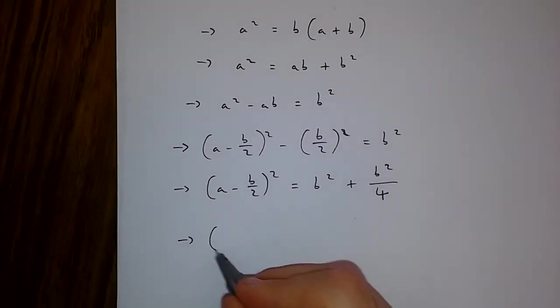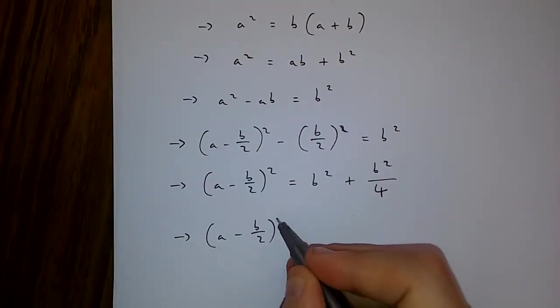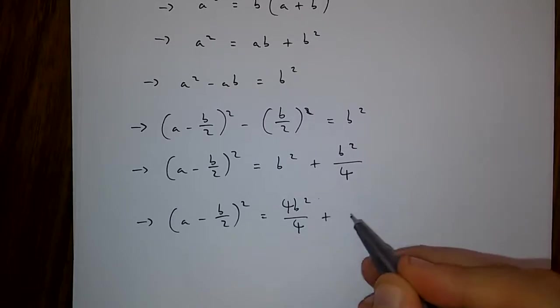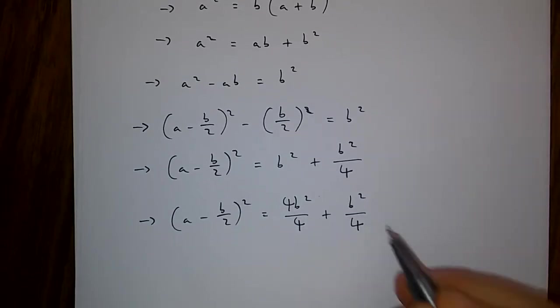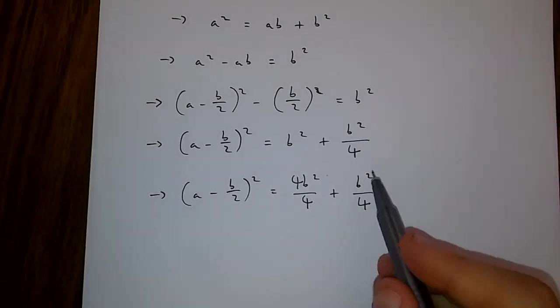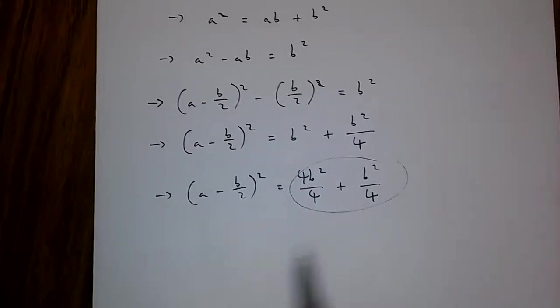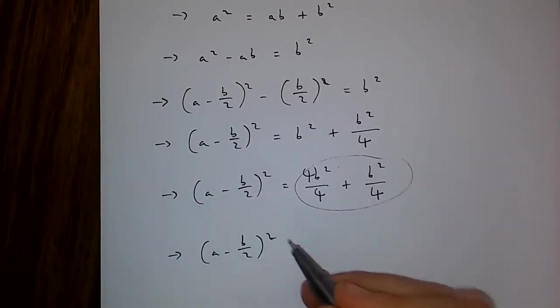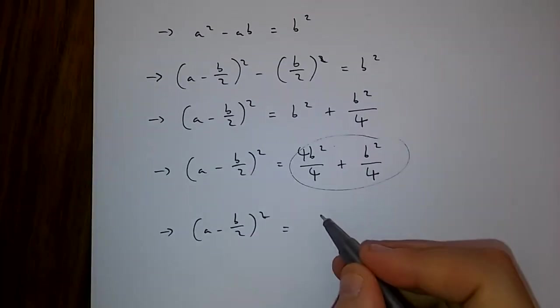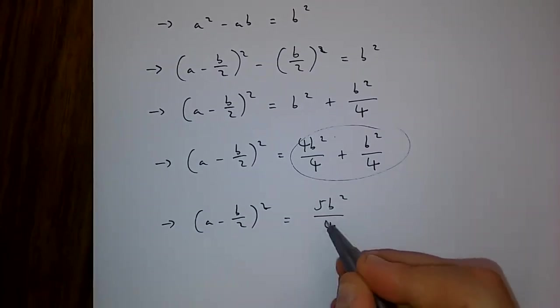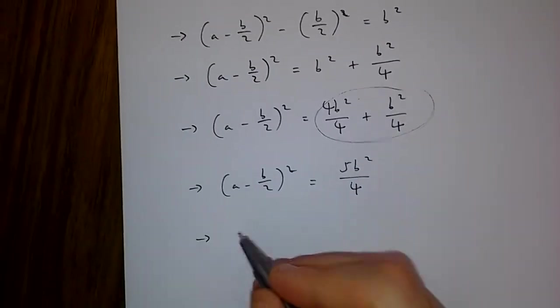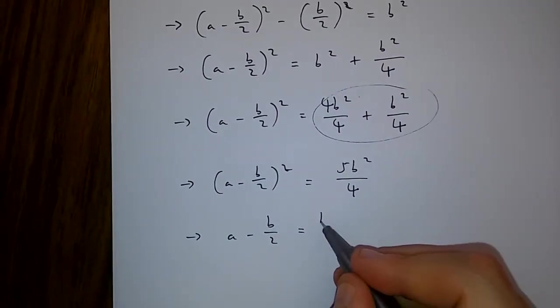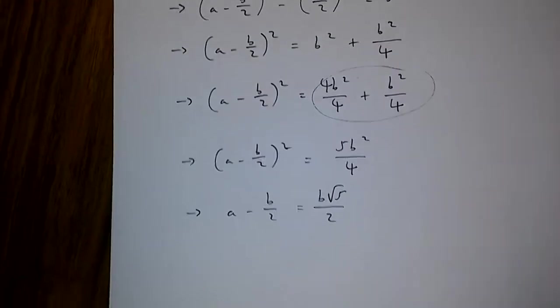Now we can simplify this side of the equation. If we do this, we get (a - b/2)² is equal to 5b²/4. This means that a - b/2 is equal to b√5/2.